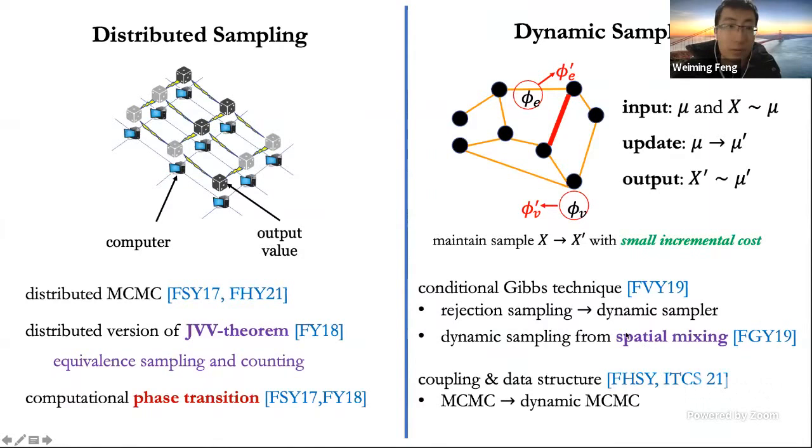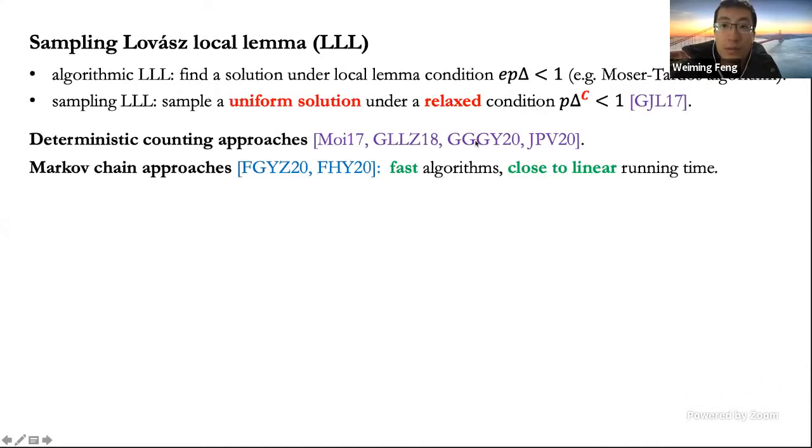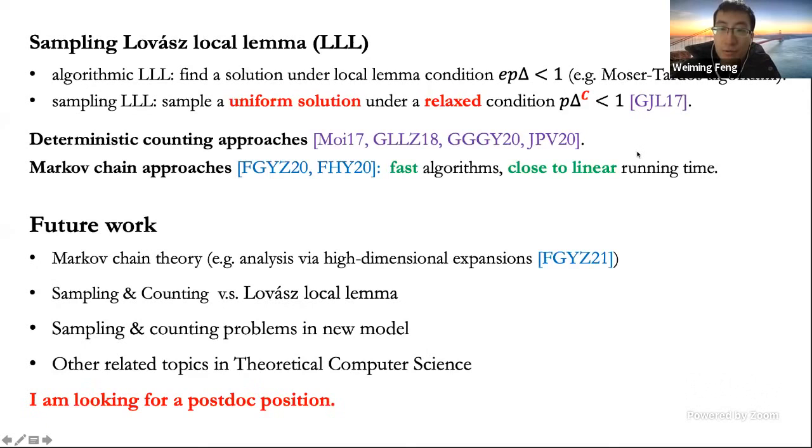Hello, everyone. I'm Wei Ming from Nanjing University. My research focuses on sampling algorithms for Gibbs distributions. So the Gibbs distribution is widely used to model joint distributions defined by local interactions. A central research problem is how to draw random samples from the Gibbs distribution. This problem is closely related to approximate counting and the inference tasks. So my research topic is to design efficient sampling algorithms for Gibbs distributions. By efficient, I mean the algorithm should have certain good features such as distributed, dynamic, fast, and so on.